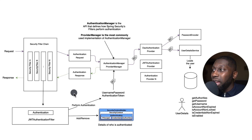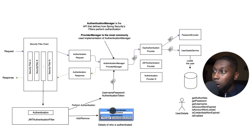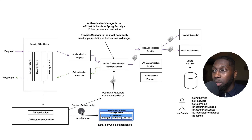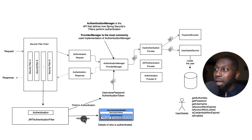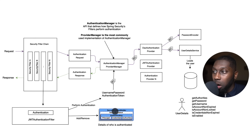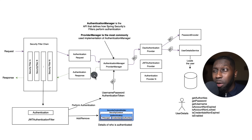If authentication succeeds, we have something called the Security Context Holder, which holds the details of the current authenticated user. If authentication fails, we remove the user from the context holder. If it succeeds, we add the authenticated user to the Security Context Holder.